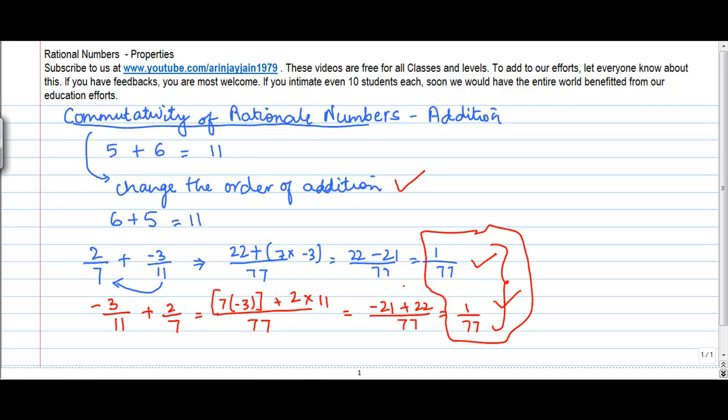And this is true for any number of rational numbers that you might want to take up. So therefore, we say that the rational numbers are commutative for addition, which means that by changing the order of rational numbers in addition, the result does not change.